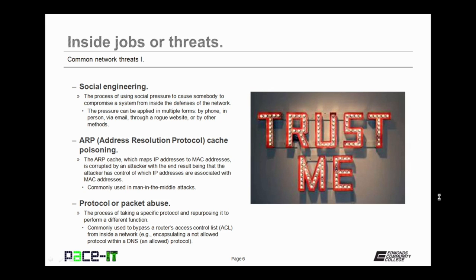Then there is social engineering. This is the process of using social pressure to cause somebody to compromise a system from inside the defenses of the network. Social engineering pressure can be applied in multiple forms — an employee can receive a phone call from somebody claiming to be from the IT department asking for their credentials, it may occur in person, through email, or through a rogue website. The best defense is through end-user education, training your end users to resist social engineering.